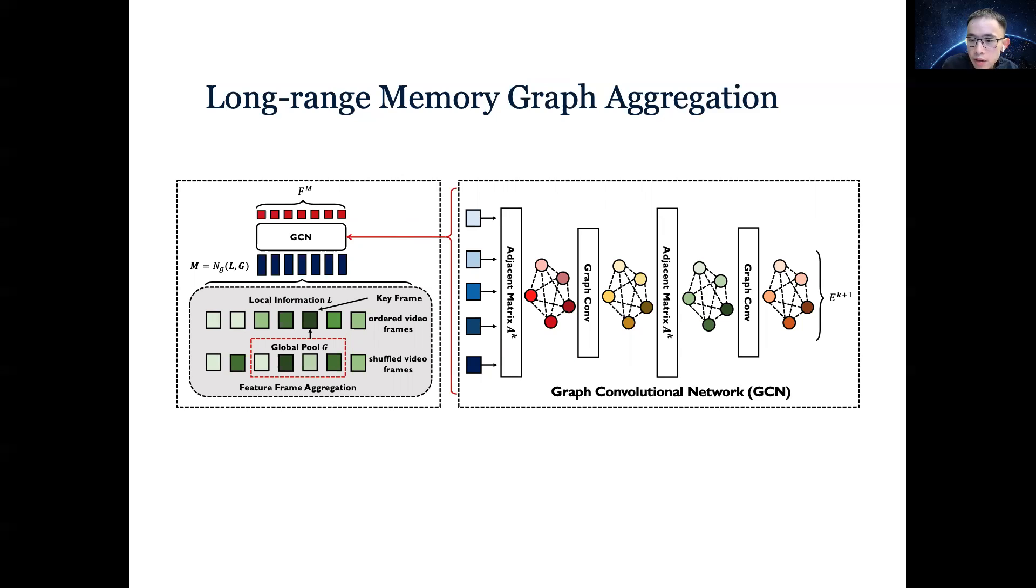We also dynamically construct the graph by graph construction network to explore the spatial temporal relationship between the input feature frames in a discriminative manner. We then construct the output features by a small network, including two convolutional layers.